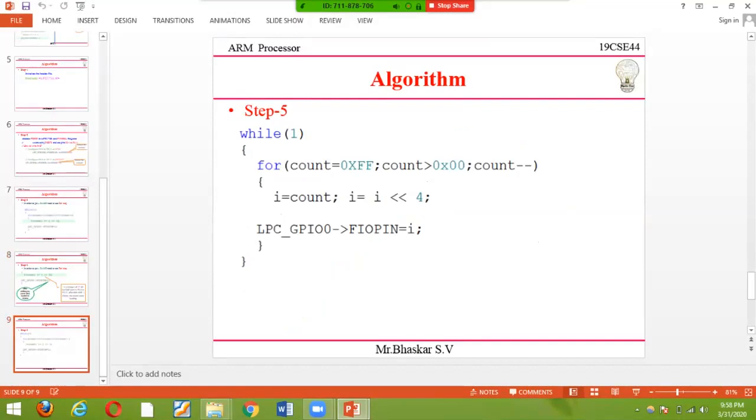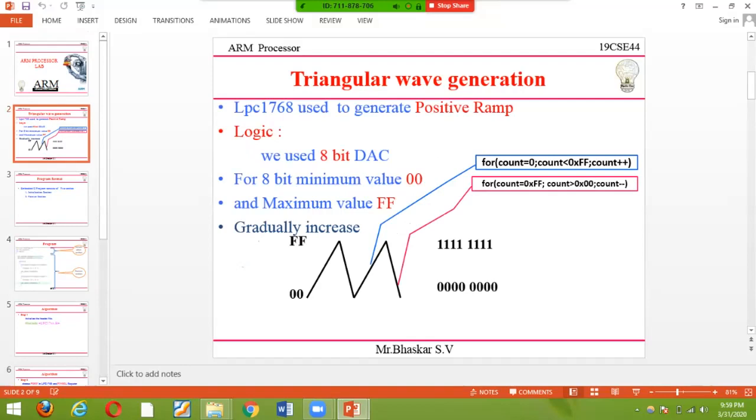Maximum value 0xFF to 0x00, count--, this way we get negative ramp. It's very simple logic. You understand positive and negative ramp to get triangular waveform.